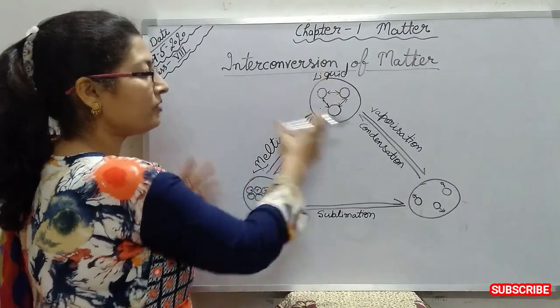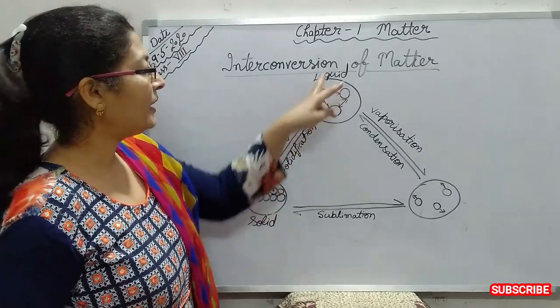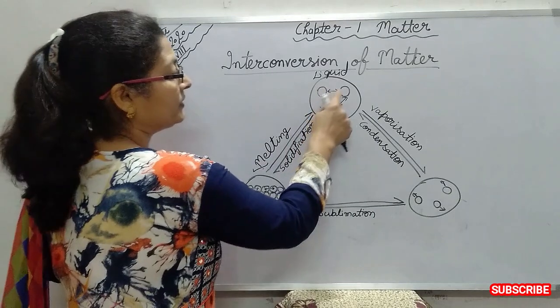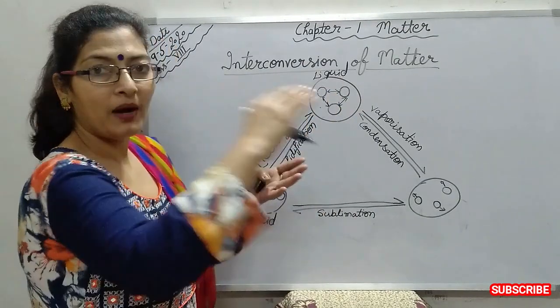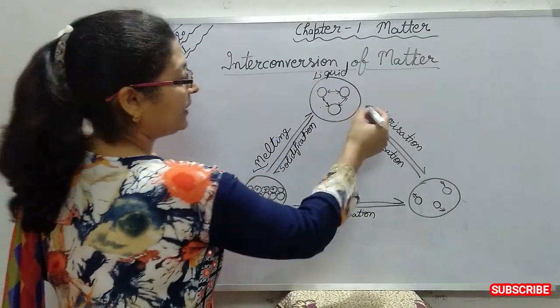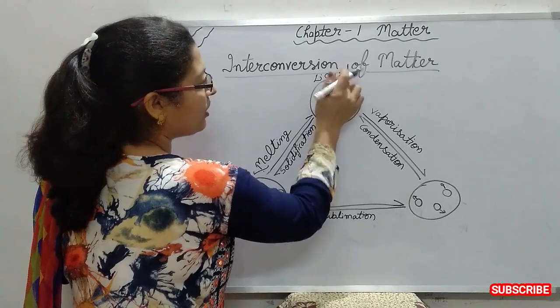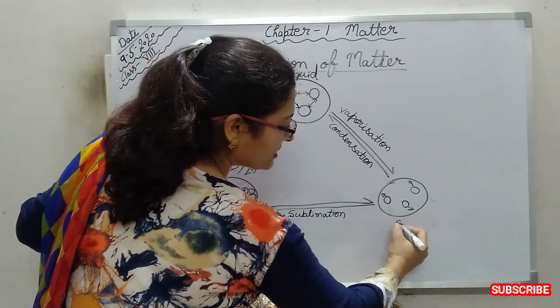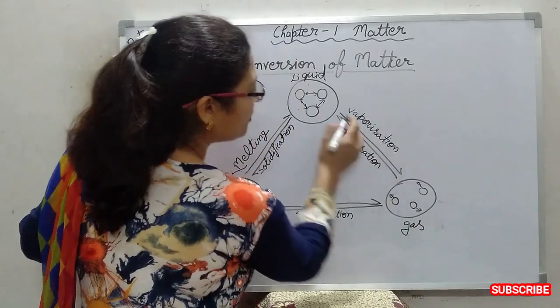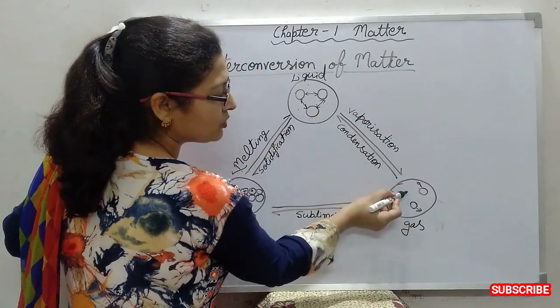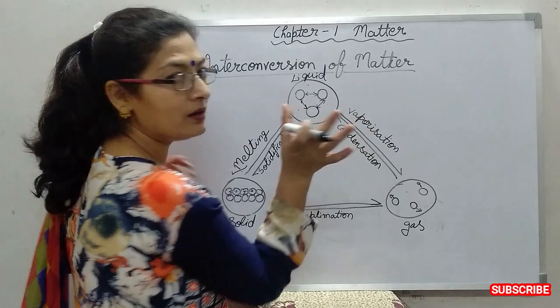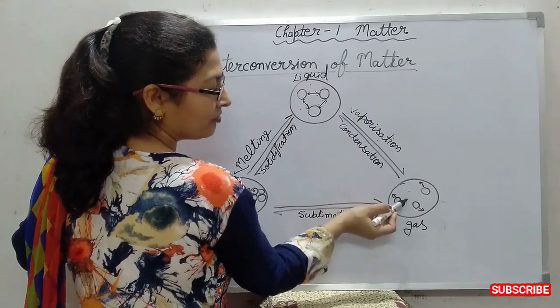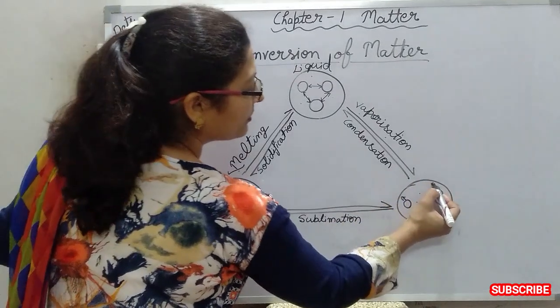Now again we are heating this, and liquid particles become more energetic and they are becoming far apart. This condition is now changing from liquid to gas. Liquid is changing to gas by increasing the temperature. This is called vaporization. Vapors are made here.